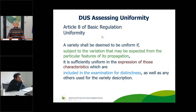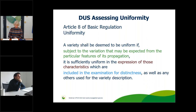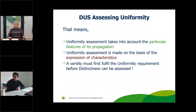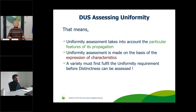With these preliminaries we enter the assessment of uniformity. The basic regulation states that a variety shall be deemed to be uniform if, subject to the variation that may be expected from the particular features of its propagation, it is sufficiently uniform in the expression of those characteristics included in the examination for distinctness and any others used for variety description. This means uniformity assessment takes into account the feature of propagation. Consequently, a variety must first fulfill the uniformity requirement before distinctness can be assessed — which is why uniformity is presented before distinctness.